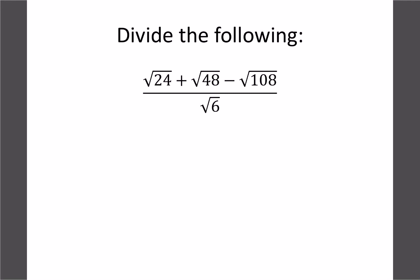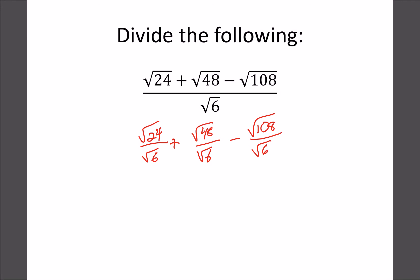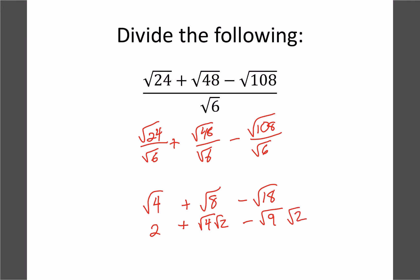The last question: what happens when we have multiple terms in the numerator? If there's only one thing on the bottom we can split it into separate fractions — 24 over 6, minus 48 over 6, plus 108 over 6 — and divide each separately. 24 divided by 6 is 4; 48 divided by 6 is 8; 108 divided by 6 is 18. Now simplify: root 4 is just 2; root 8 breaks into 4 and 2, giving 2 root 2; root 18 breaks into 9 and 2, giving 3 root 2. So we have 2 minus 2 root 2 plus 3 root 2. Combining like terms: the root 2 terms give (negative 2 + 3) root 2 = root 2, but the negative sign gives us 2 minus root 2 as the final answer.